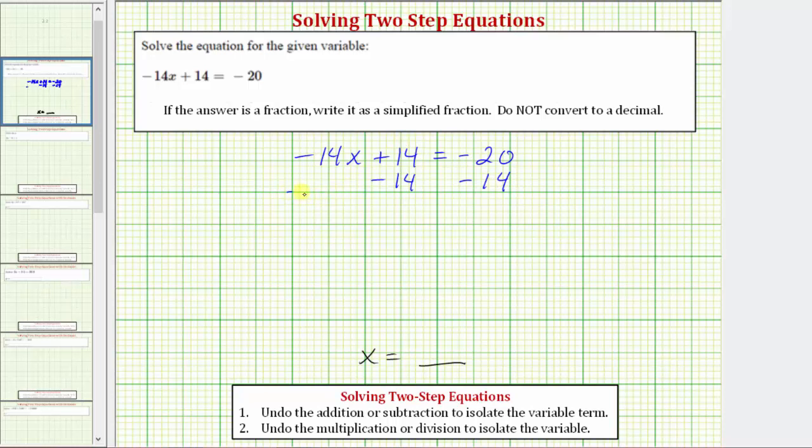Now we'll simplify both sides of the equation. Looking at the left side, the minus 14 undoes the plus 14. So on the left side we just have the variable term negative 14x. On the right side, we have negative 20 minus 14, which is the same as negative 20 plus negative 14, which equals negative 34.